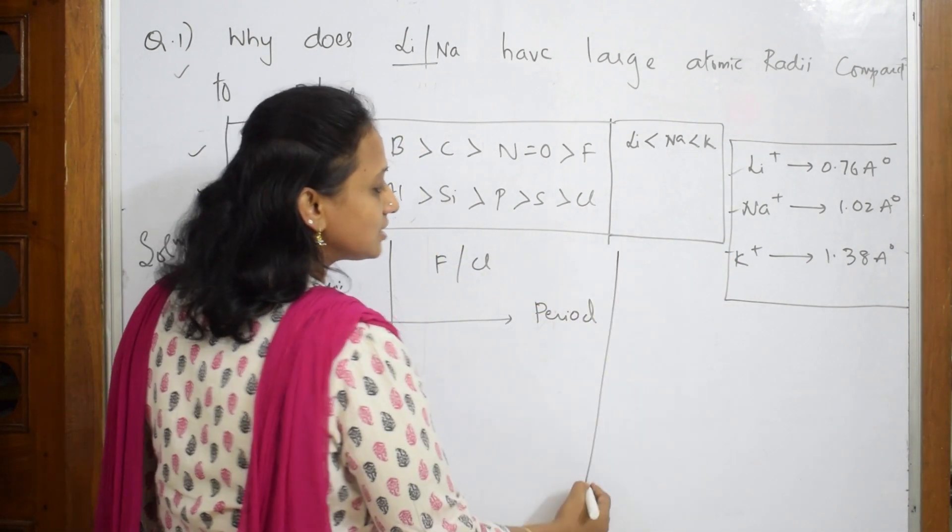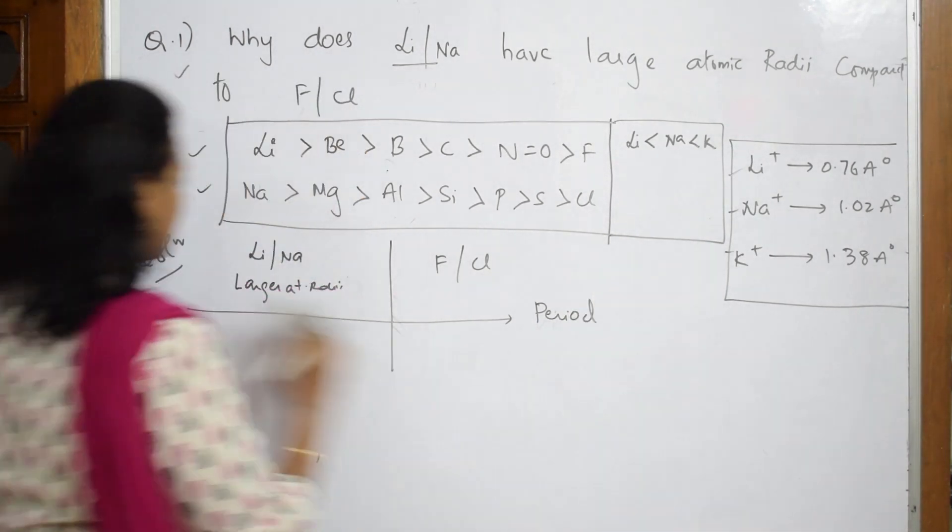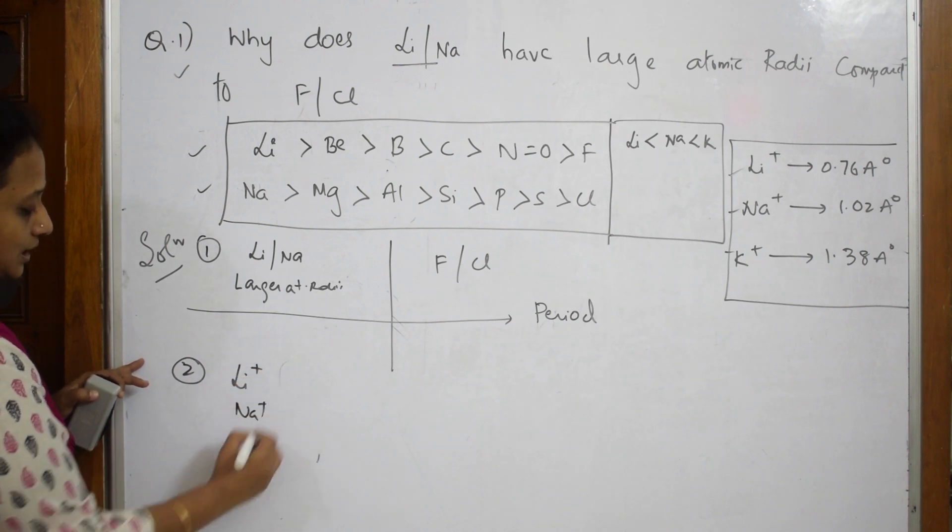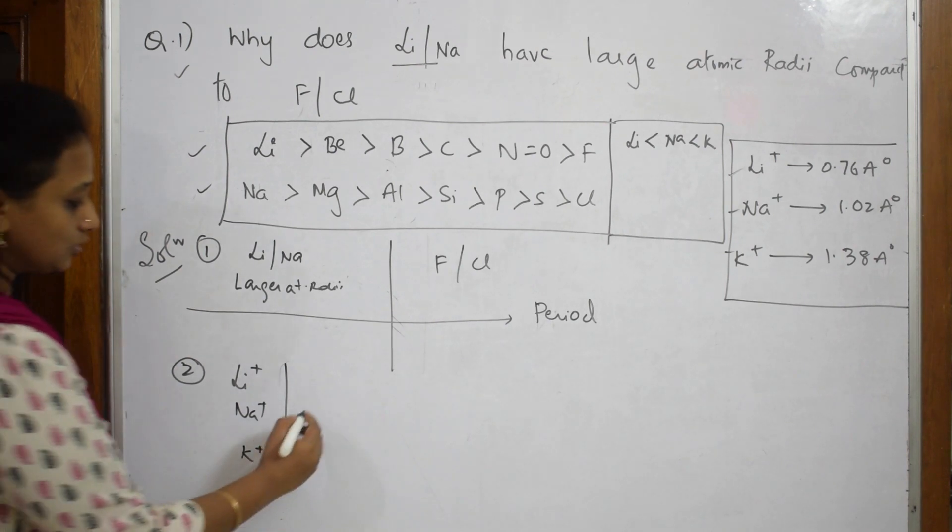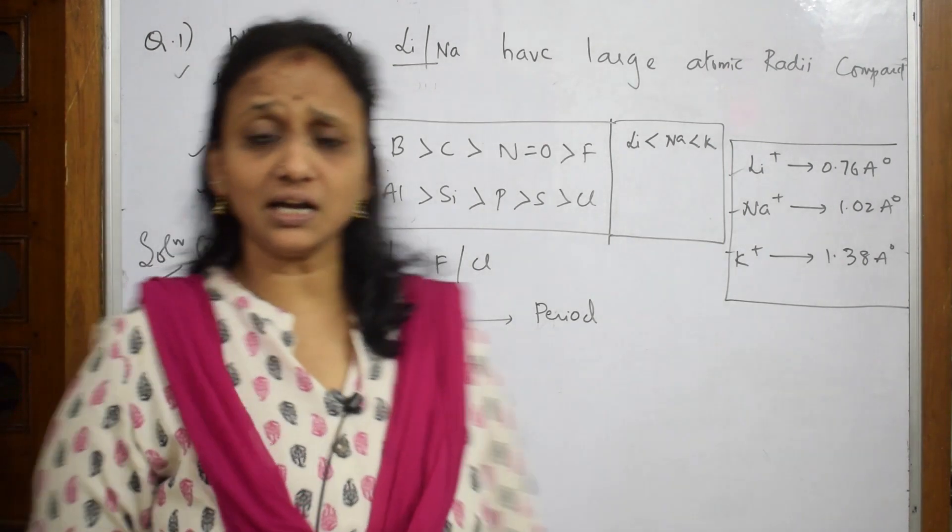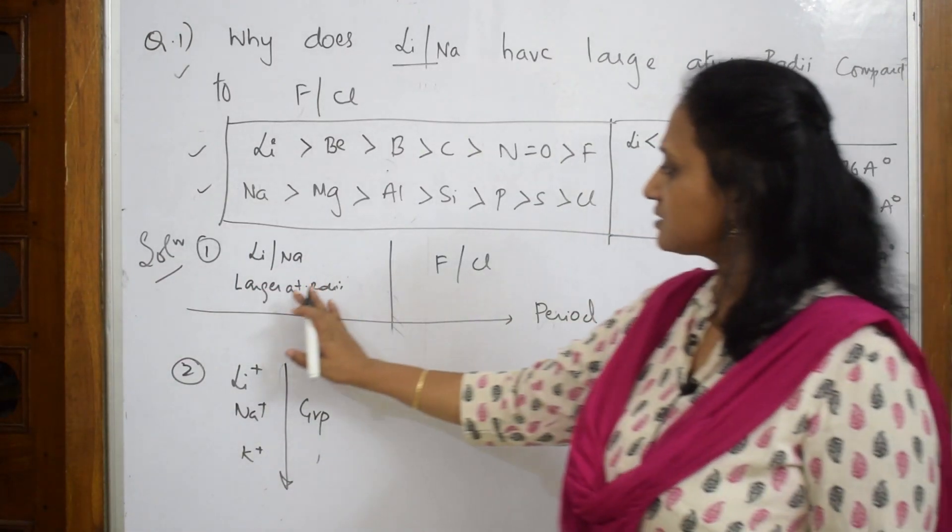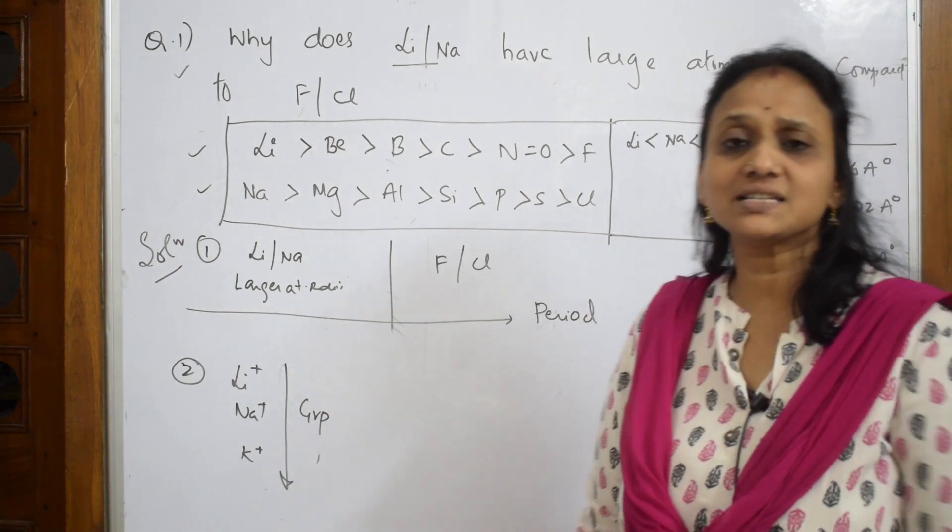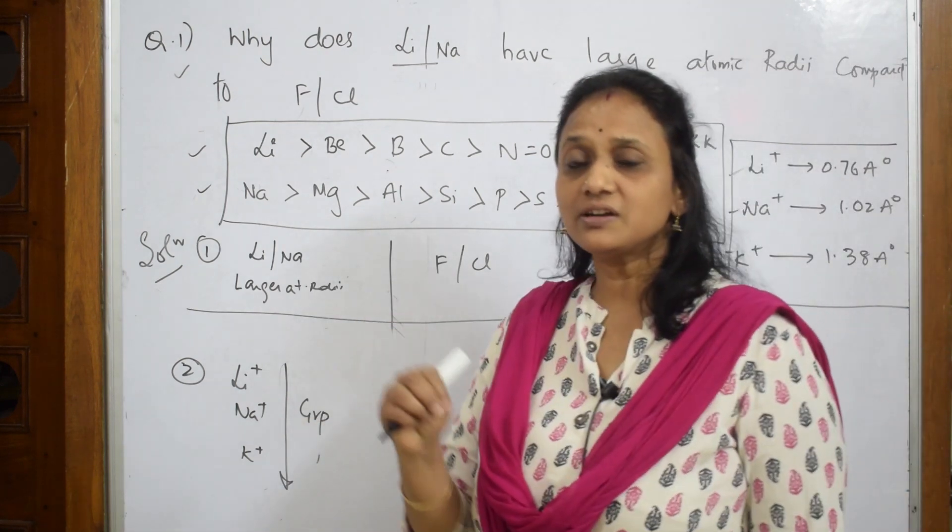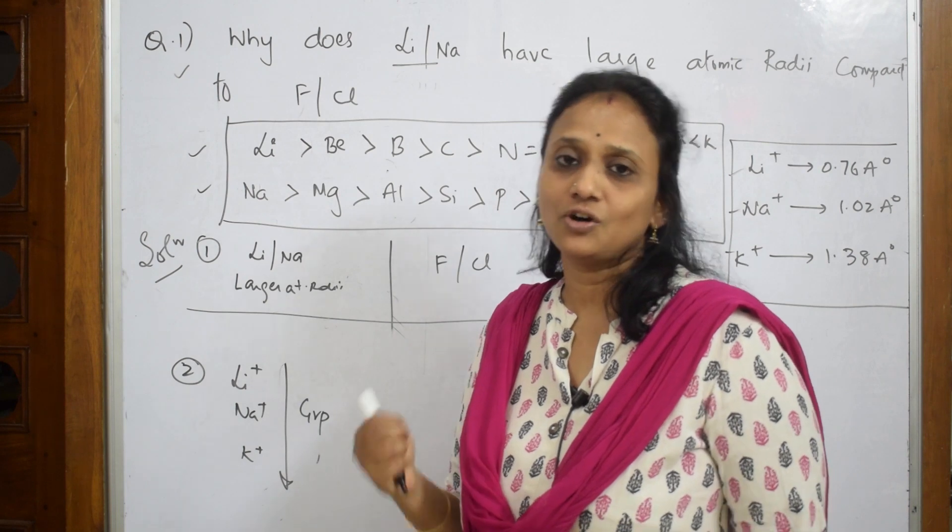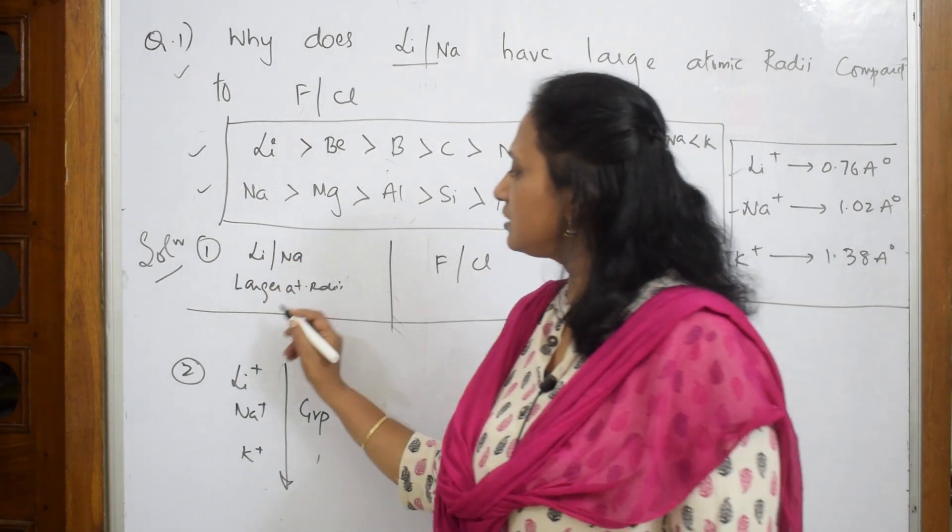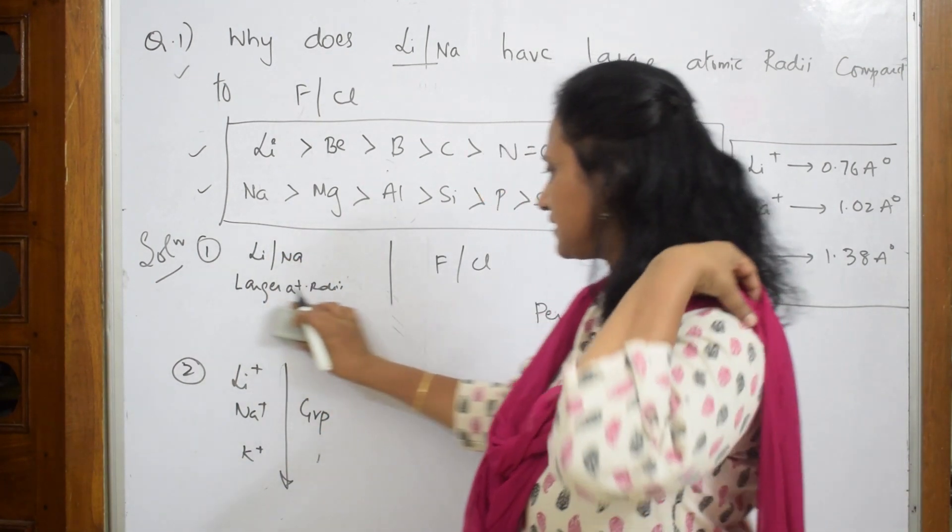Let us write that concept. This is the first data, this is the second data. Here they've given us values for Li⁺, Na⁺, and K⁺. We are going from top to bottom in a group. Now let us justify. In a period, when we move from left to right, the electron keeps adding to the same shell. When it adds to the same shell, there is effective nuclear charge acting on outer electrons, so obviously the size will be less.